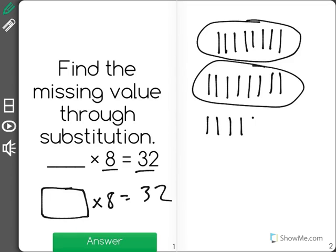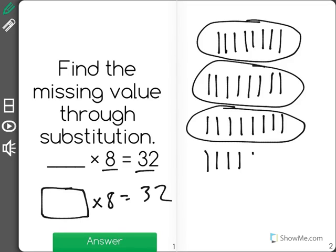17, 18, 19, 20, 21, 22, 23, 24. There's 3 groups of 8. 25, 26, 27, 28, 29, 30, 31, 32.